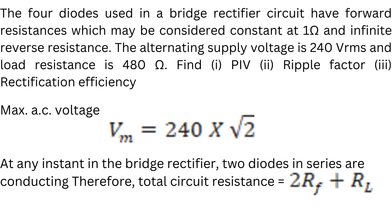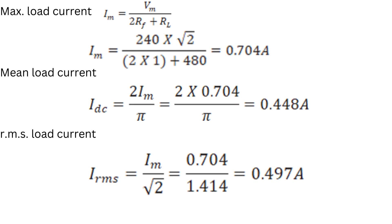Find PIV, ripple factor, and rectification efficiency. The maximum voltage for the alternating waveform is Vm = Vrms × √2, therefore 240 × √2, which gives 339.36 volts. At every instant, two diodes are always in conduction, so the total resistance is 2Rf + RL. The maximum load current Im = Vm / (2Rf + RL).